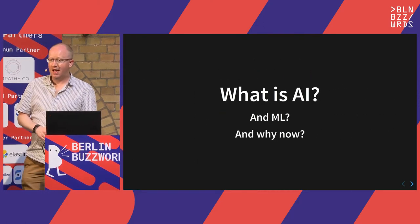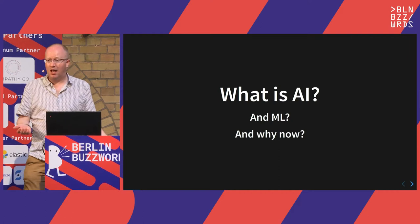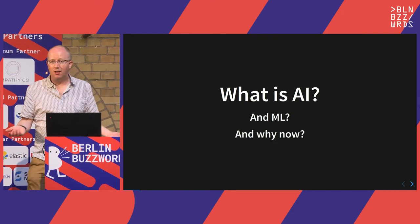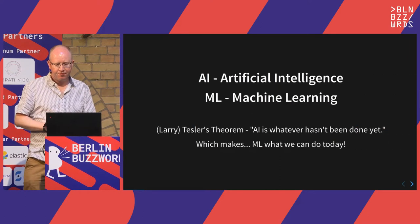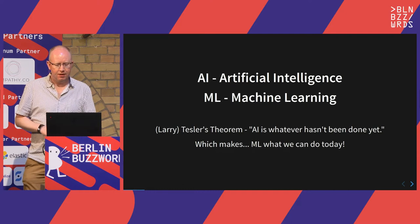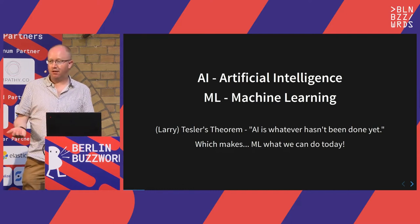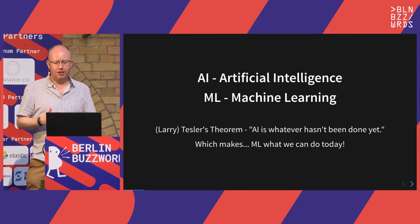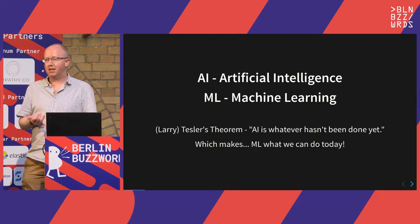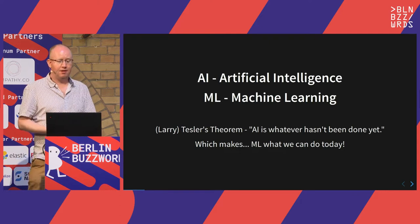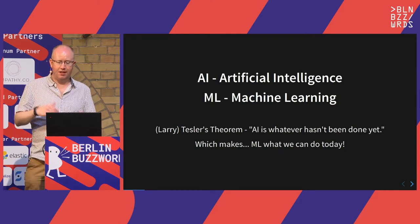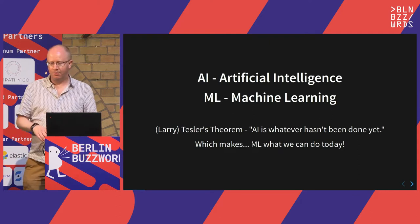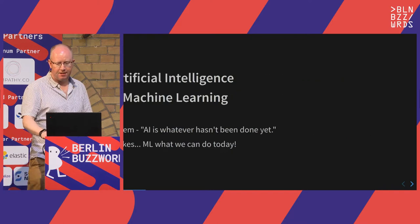So what is AI? What is ML? Why are we at a buzzwords conference talking about it? Larry Tesler's theorem: AI is whatever hasn't been done yet, which makes ML — machine learning — the things that we can do today.